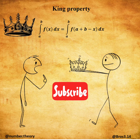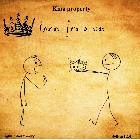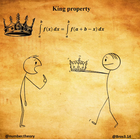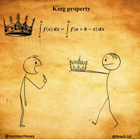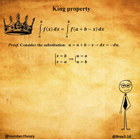By applying King's Rule, also known as the King property, which is a useful property for definite integrals. It states that if you have a function f(x) on an interval [a, b] and you replace x with a plus b minus x in the integral, the value of the integral remains the same.